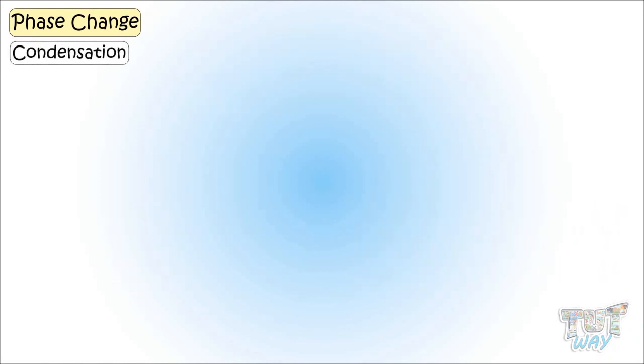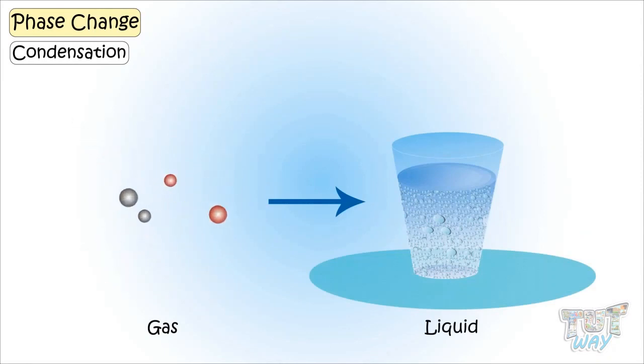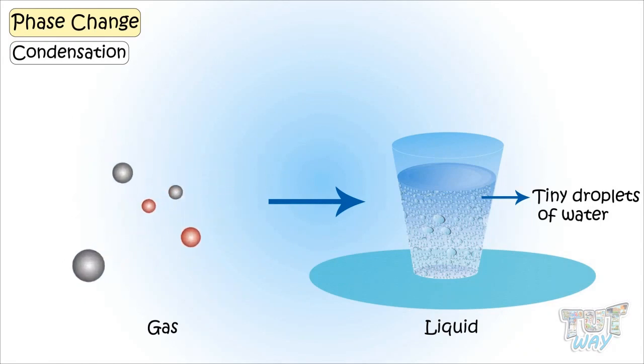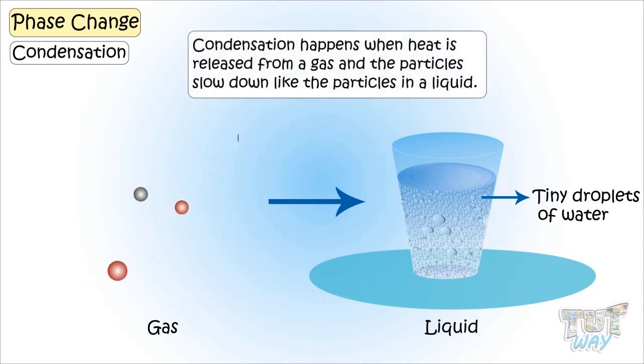Condensation is the conversion of gas into liquid. The appearance of tiny droplets of water outside the glass of chilled drinks is an example of condensation. Condensation happens when heat is released from a gas and the particles slow down, like the particles in a liquid.